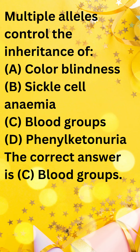Multiple alleles control the inheritance of: A. Color blindness, B. Sickle cell anemia, C. Blood groups, D. Phenylketonuria. The correct answer is C. Blood groups.